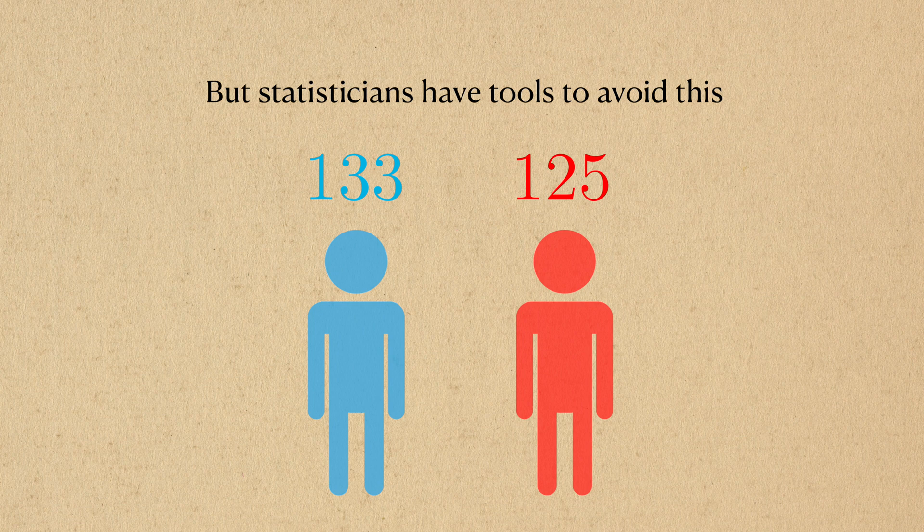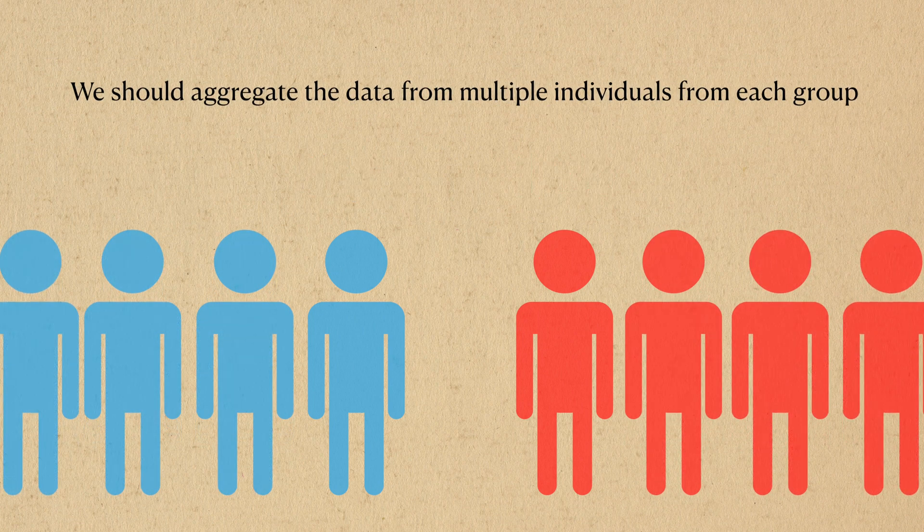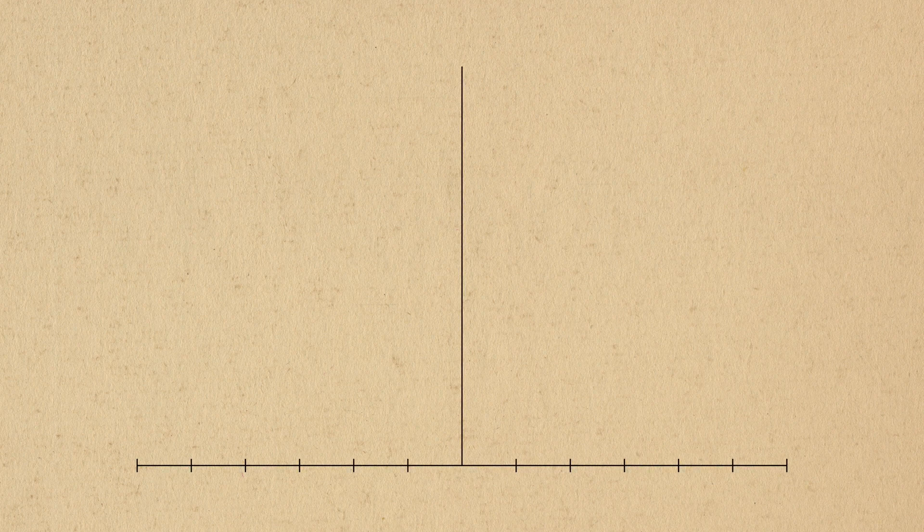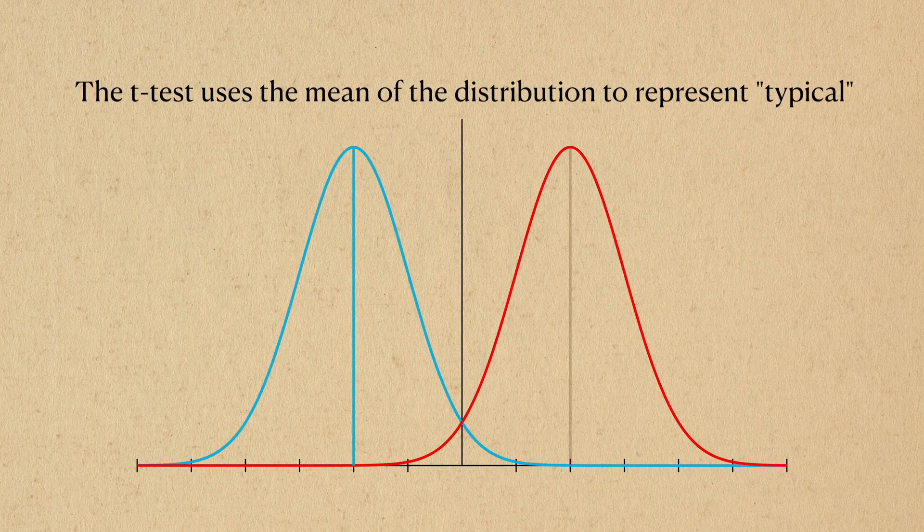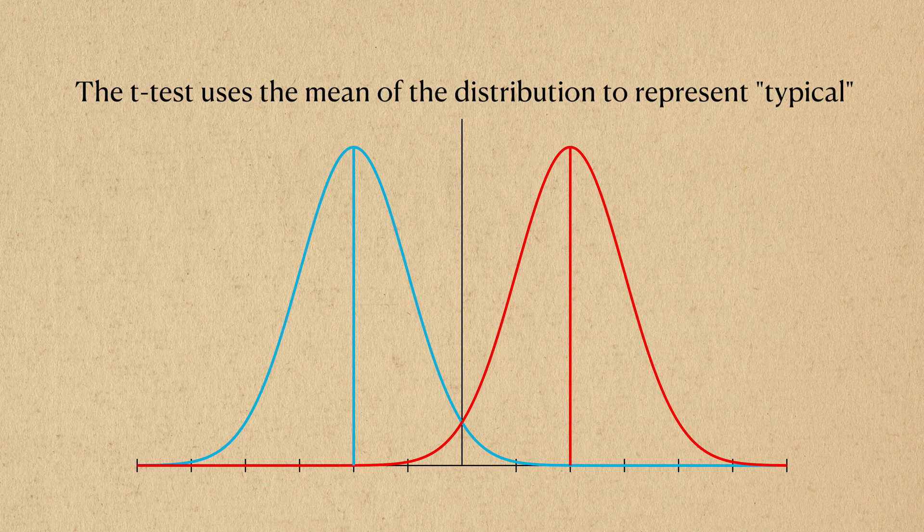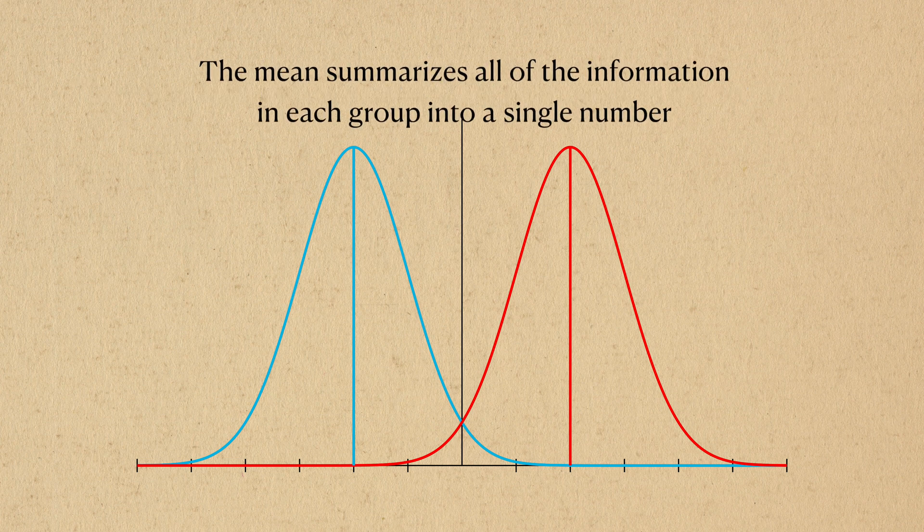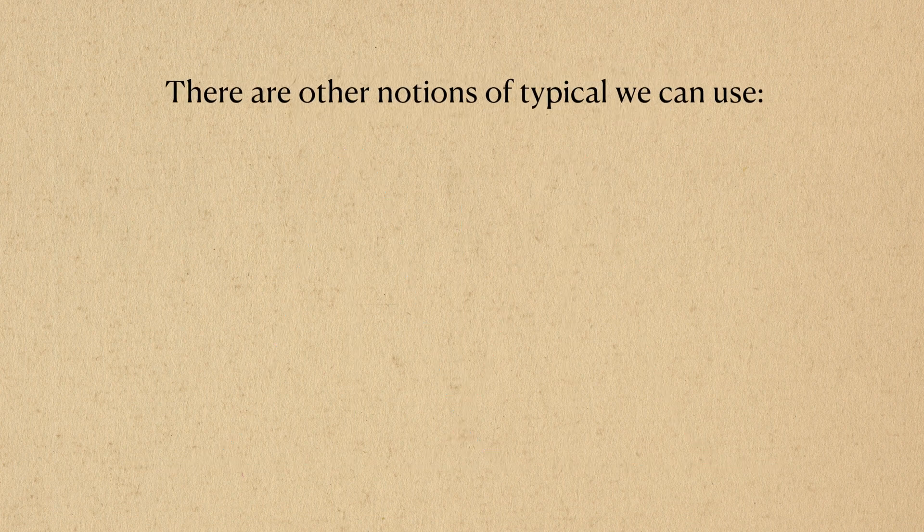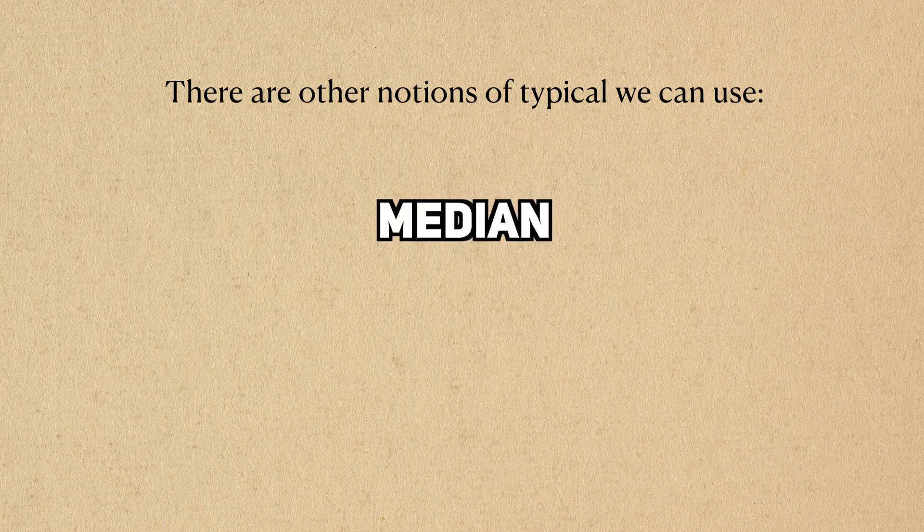Statisticians want to avoid this, so instead of comparing individuals, we should aggregate the data of multiple individuals together and compare the typical outcomes of group A and B together. In the case of the t-test, we use the means of the two groups to represent a typical person in each group. In other words, the mean acts as a summary for all the information contained in the PDF. Other statistical tools for comparison may use another notion of typical, such as the median or mode.